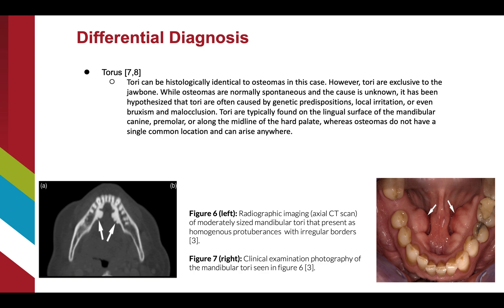Figure 6 shows a CT scan of moderately sized mandibular torii with irregular borders, and in Figure 7 you can notice the prominent torii of the same patient from an intraoral photographic perspective.